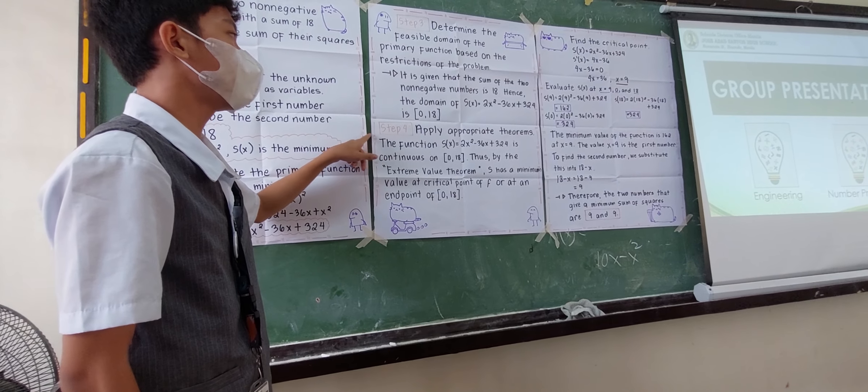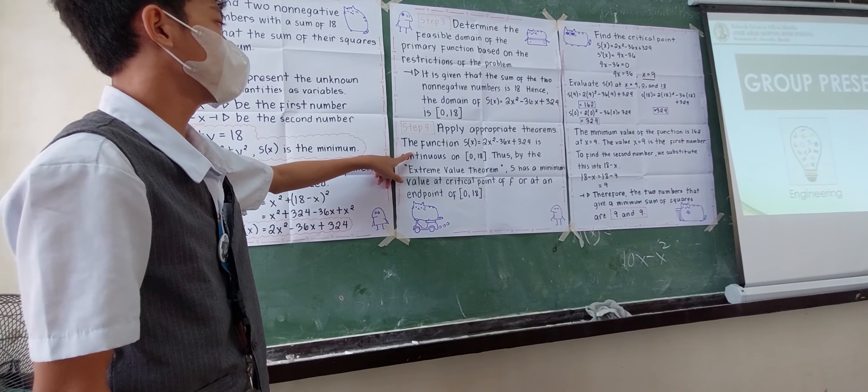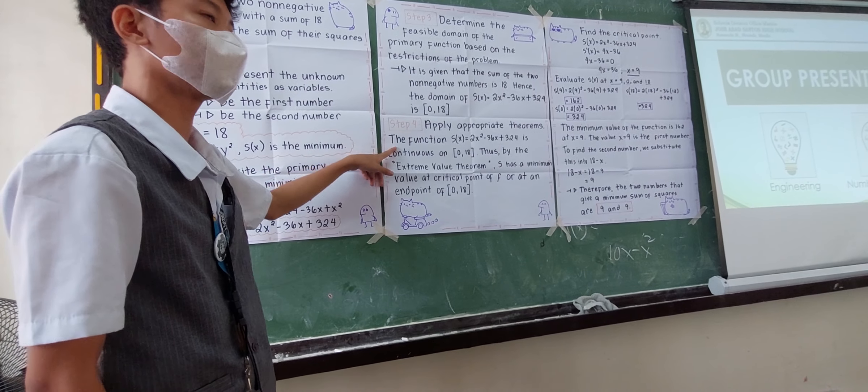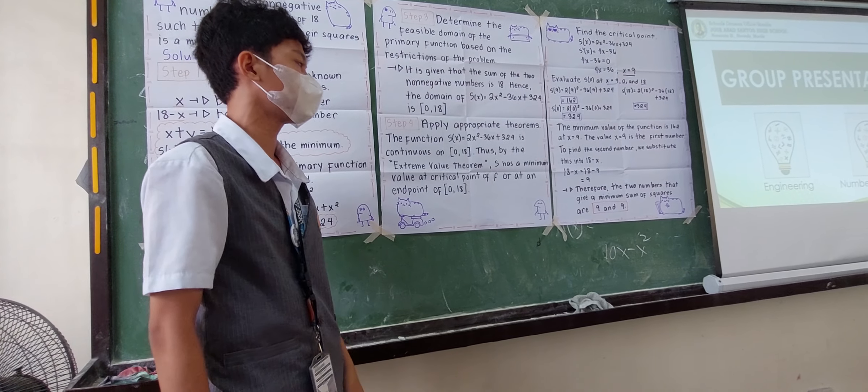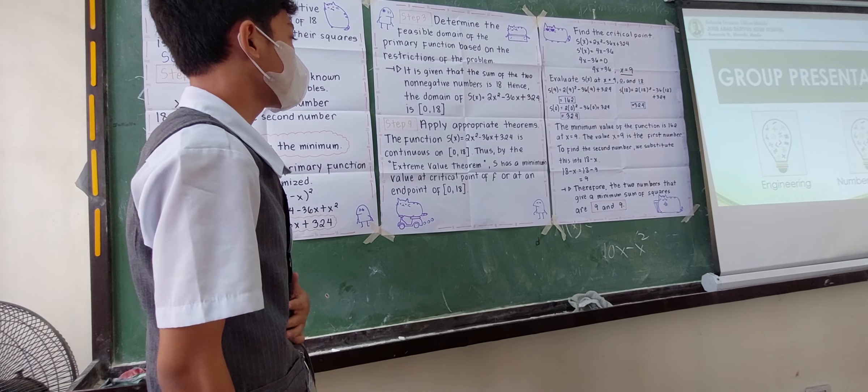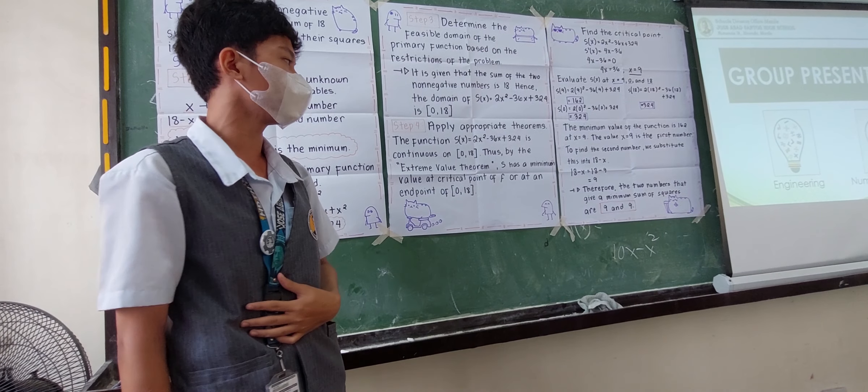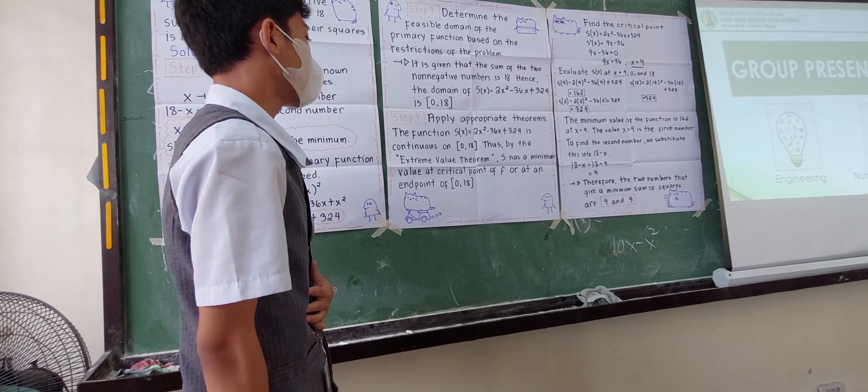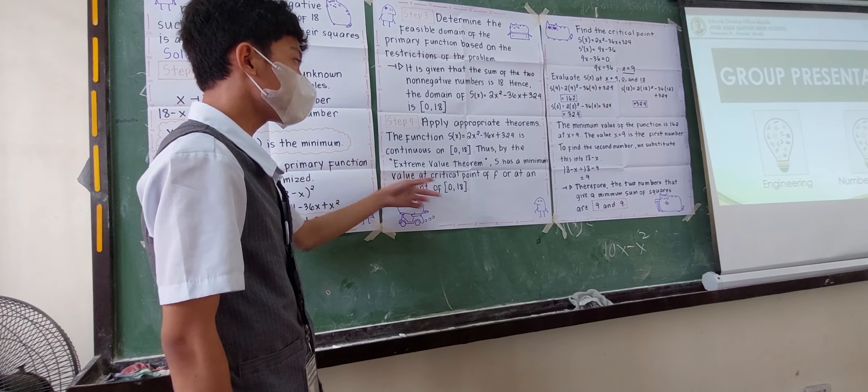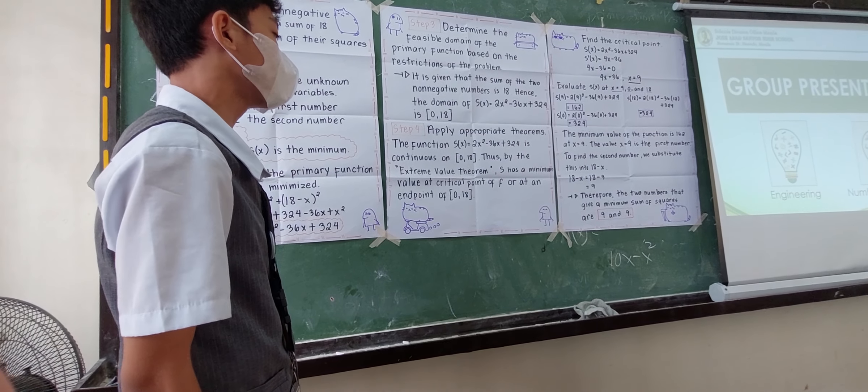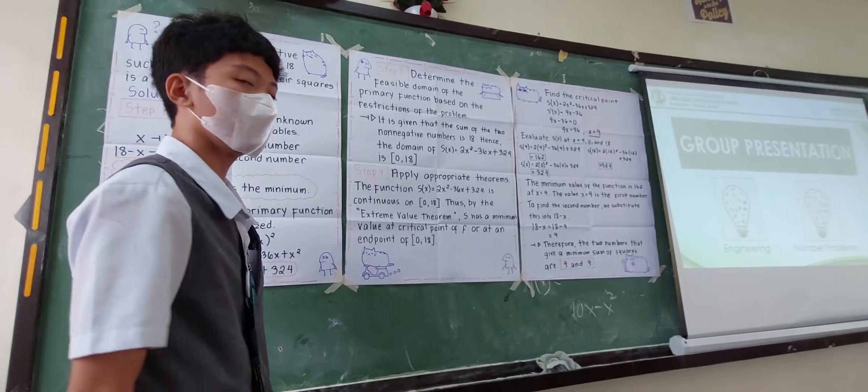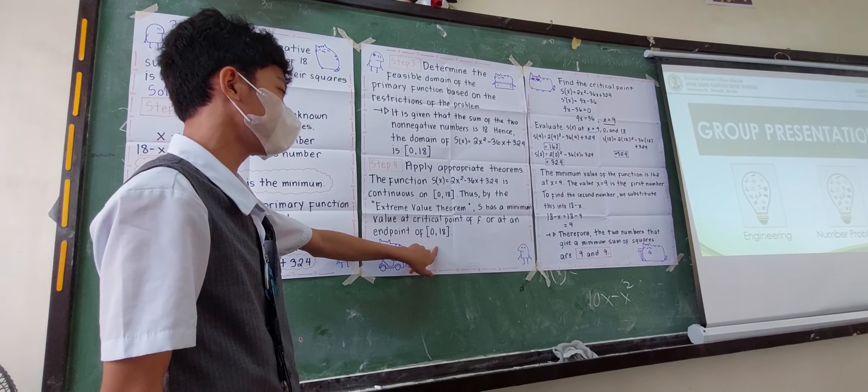Step number 4, apply appropriate theorems. The function S of X equals 2X squared minus 36X plus 324 is continuous on the interval from 0 to 18. Thus, by the extreme value theorem, S has a minimum value at a critical point of S or at an endpoint of the interval from 0 to 18.